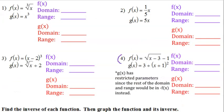Let's look at number four. It's a little bit out of the ordinary. This one will have a restricted domain and range because it would have restricted parameters for this quadratic since the rest of the domain and range would be negative f(x) instead. So the domain of f(x) would be from 3 to infinity because if you had less than 3, it would no longer be a real answer. You'd have a negative inside the radical. We don't want that.